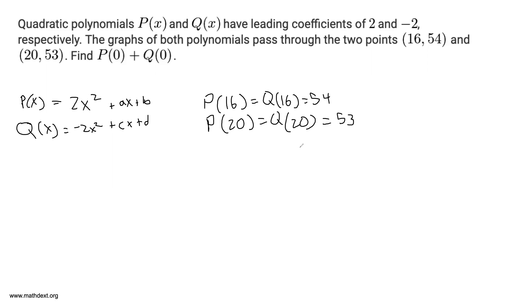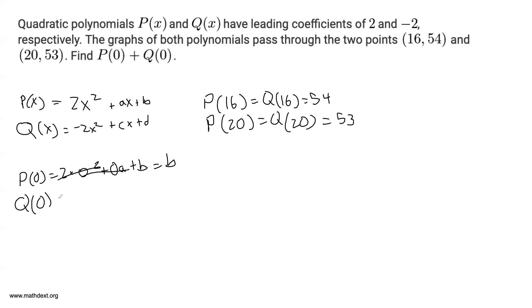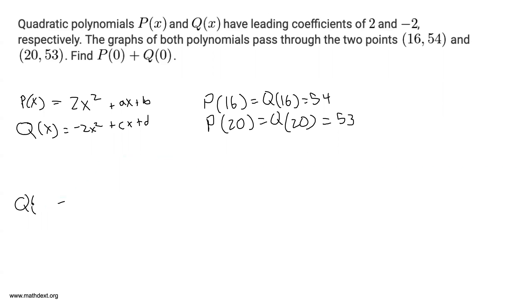This is because if you plug 16 into p(x) you get 54, and if you plug 16 into q(x) you get 54 — that's why the point (16, 54) is on both p(x) and q(x). Similarly, p(20) and q(20) are both 53. Now, what is p(0)? When x = 0, p(0) = 2(0)² + 0·a + b = b. Similarly, q(0) = d. So what we want to find is p(0) + q(0) = b + d.